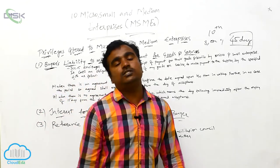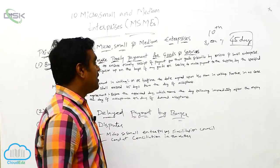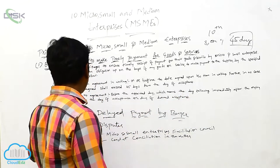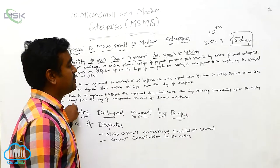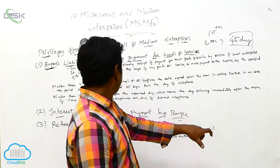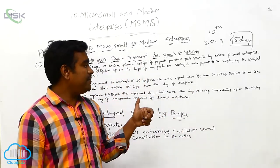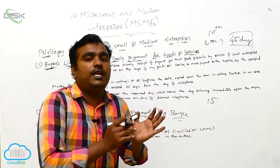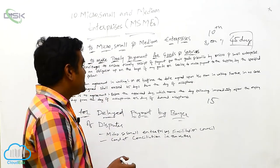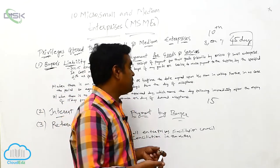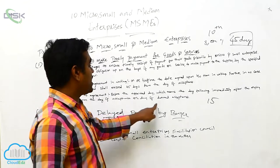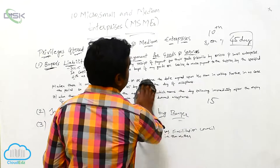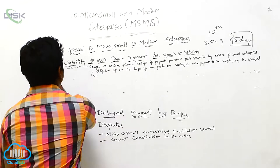If there is no agreement, payment must be made before the appointed day. The appointed day means the date following immediately after the expiry of 15 days from the date of acceptance or the date of deemed acceptance. So if I purchase goods, after 15 days are completed, the appointed day starts. Before the appointed day, we have to pay. So if there is no agreement, these are the instructions they will follow.